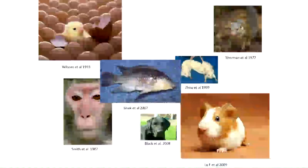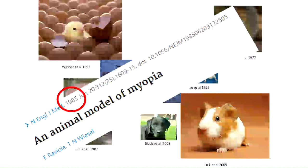This is true of every animal model tested — fish, dogs, reptiles, tree shrews, primates, chickens, and humans. This research has been well established for the past 35 years, representing the first reported instances of using animal models to induce refractive changes, both myopic and hyperopic. Ultimately, these lens experiments are interrupting the process of emetropization.